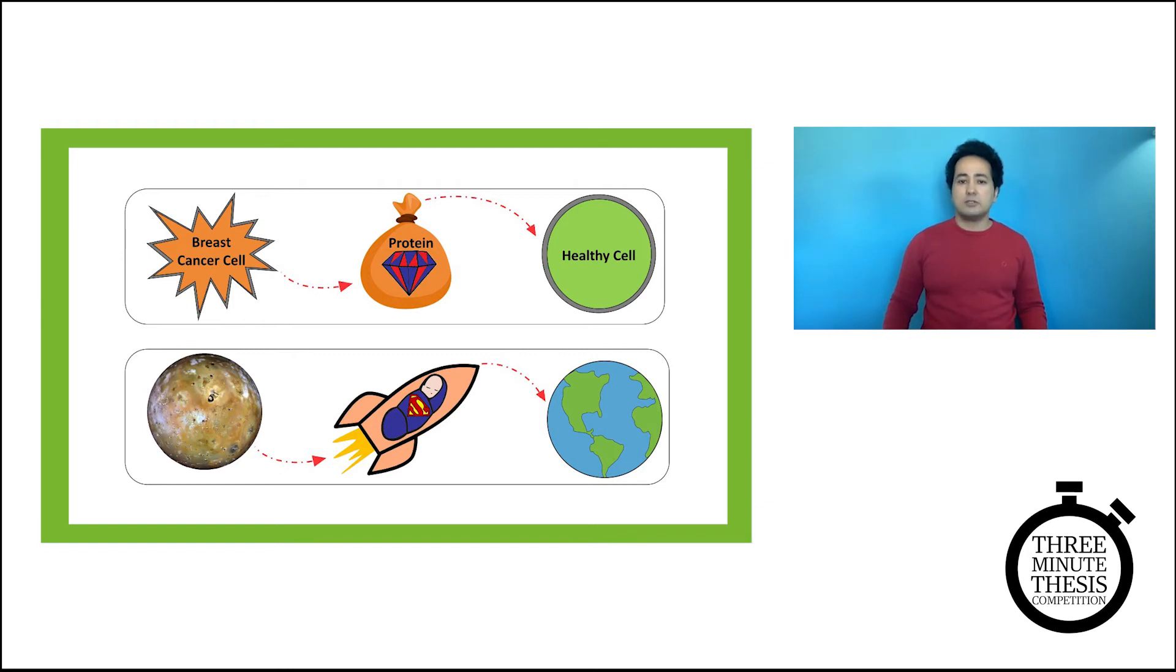To get ahead of the tumor growth and spread, we want to detect these proteins as soon as possible, and that's where my research comes in. These vesicles are very small, which means we can place one million of them on the tip of a sewing needle. I use specialized and very sensitive pieces of equipment to detect these very tiny vesicles.